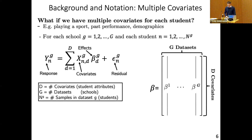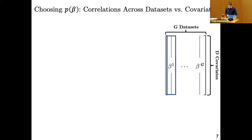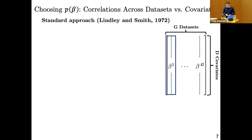If we want to take a Bayesian analysis to inferring these effects, the question we need to answer first is: what prior do we put on this matrix beta?